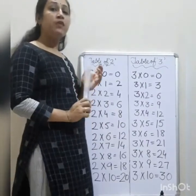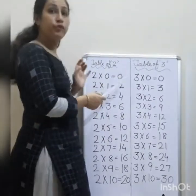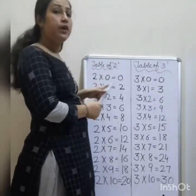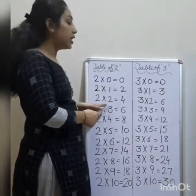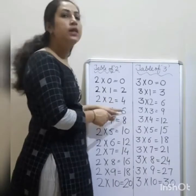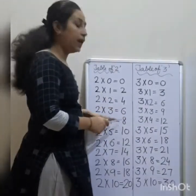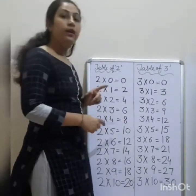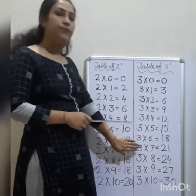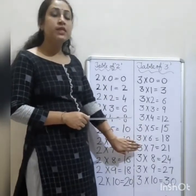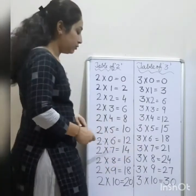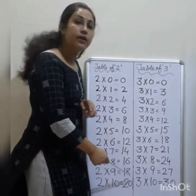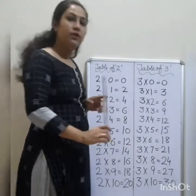Okay, let's speak with me. Table of 2: 2 0's are 0, 2 1's are 2, 2 2's are 4, 2 3's are 6, 2 4's are 8, 2 5's are 10, 2 6's are 12, 2 7's are 14, 2 8's are 16, 2 9's are 18, and 2 10's are 20.